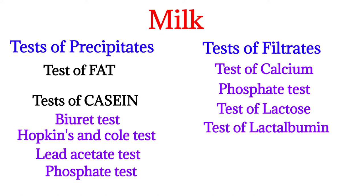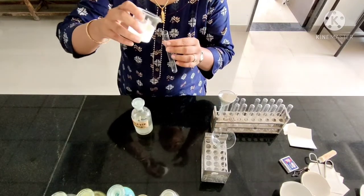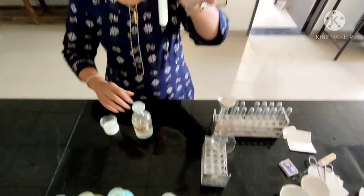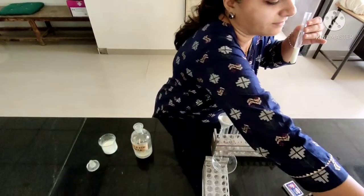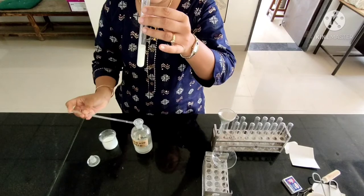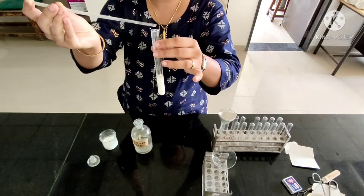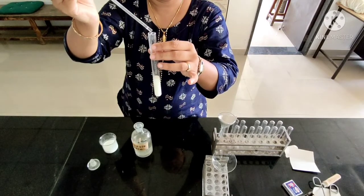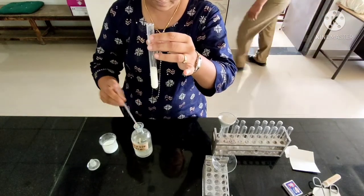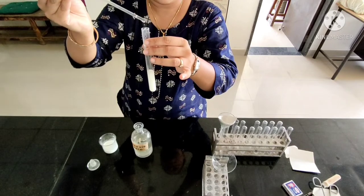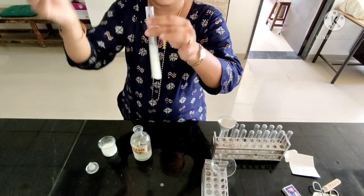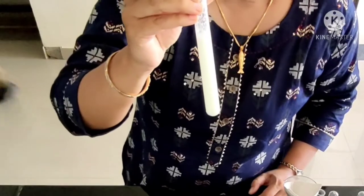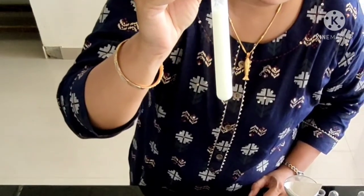Now Dr. Vandana will perform the tests. Take one test tube with 5 ml of milk, then add 1% acetic acid drop by drop until maximum precipitation occurs. You can see there will be maximum precipitation in the test tube.